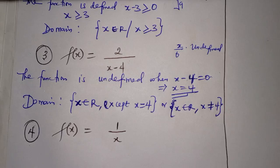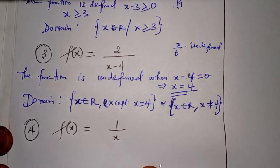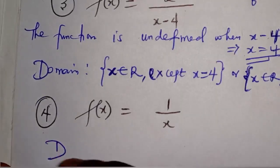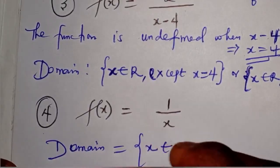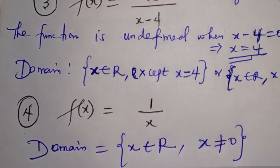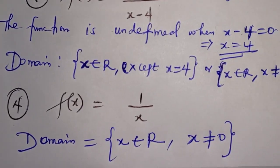Similarly, for number 4, f of x equal to 1 over x. The function will be undefined whenever x is equal to zero — that is the denominator. So we exclude zero from the set of real numbers to form the domain. The domain is the set of numbers x which is a member of the set of real numbers such that x is not equal to zero.